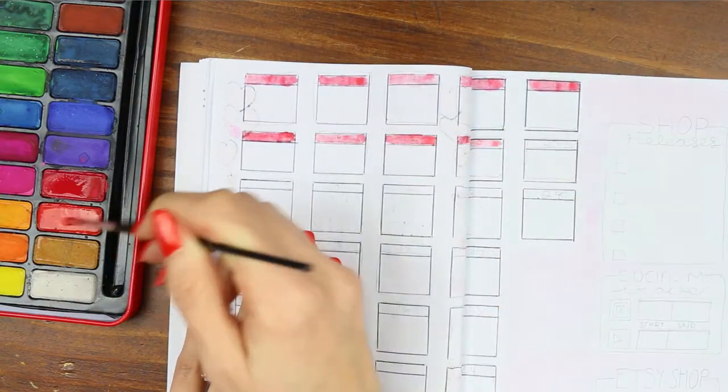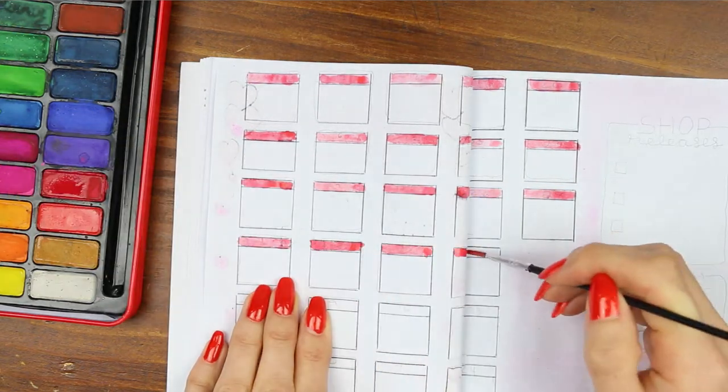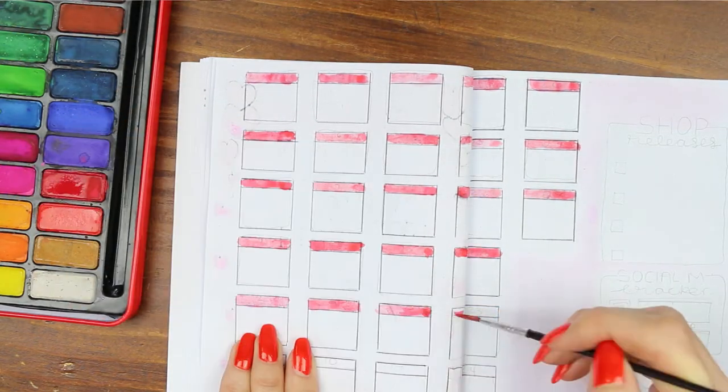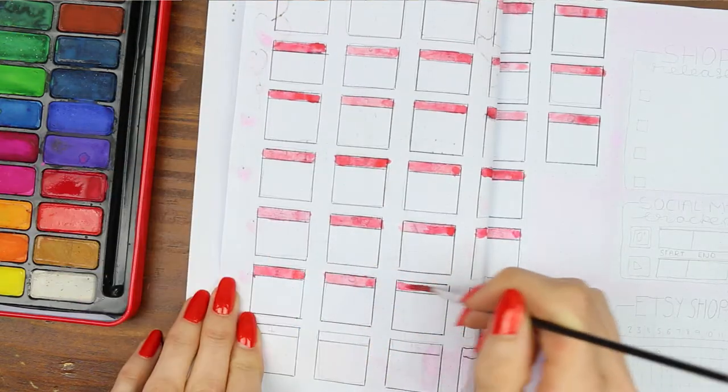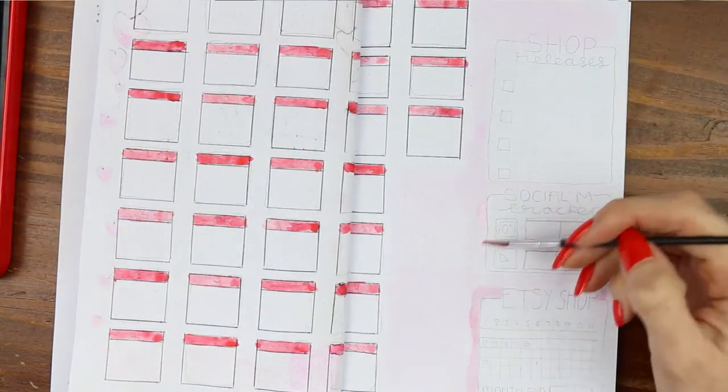It would have looked really nice if I'd ombred this red all the way down so I had it kind of deep red at the top and then it get lighter and lighter as it goes down. But I only thought of that halfway around so you know I just carried on. I've also done a really faint drop shadow in the red around my sidebar boxes.